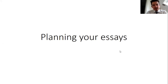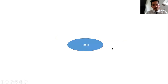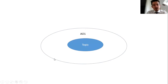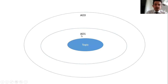So these are the steps we recommend you take in terms of planning your essay. Take a piece of A4 or A3 paper and in the middle of it write your topic of focus. Then draw a circle around it labelled AO1, and I'll explain how we're going to use that in a minute. You'll then do a second circle around it for AO3, which counts as our context.